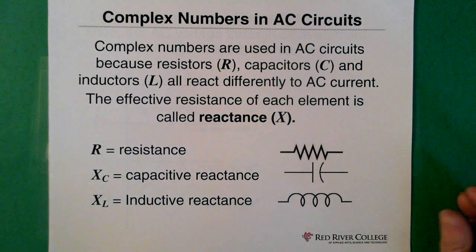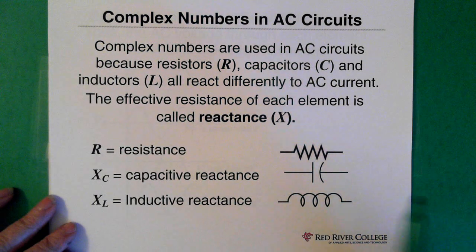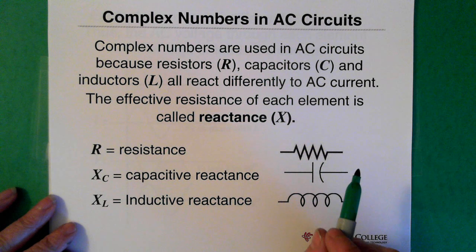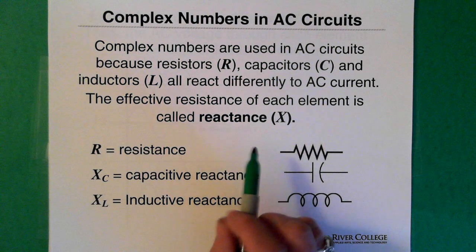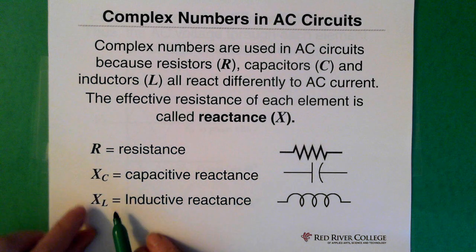Complex numbers are used in AC circuits because the resistors, capacitors, and inductors all react differently to AC current. Another piece of information that's important is that the effective resistance of each element is called the reactance. Those elements that I'm talking about are the capacitor and the inductor.